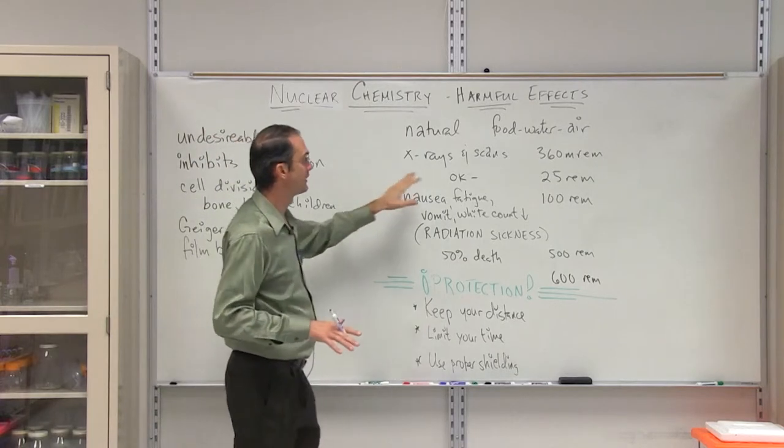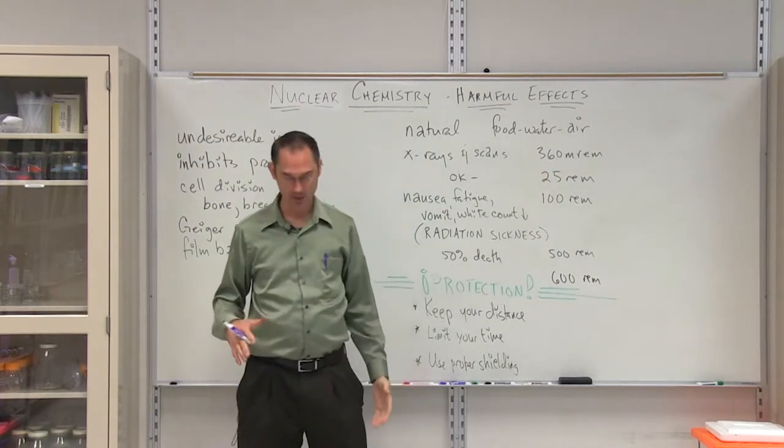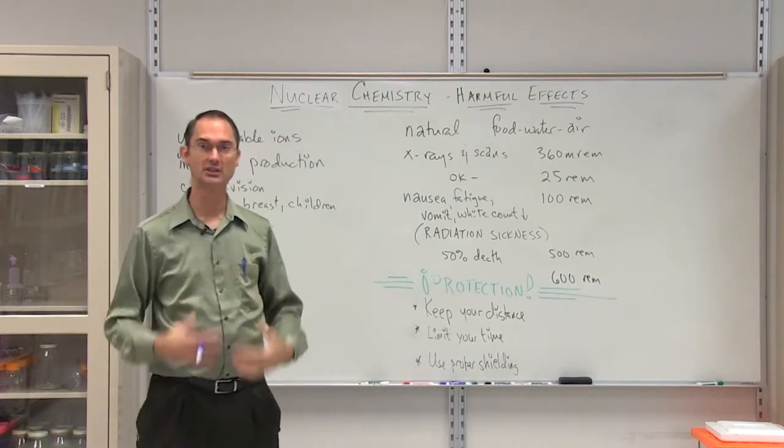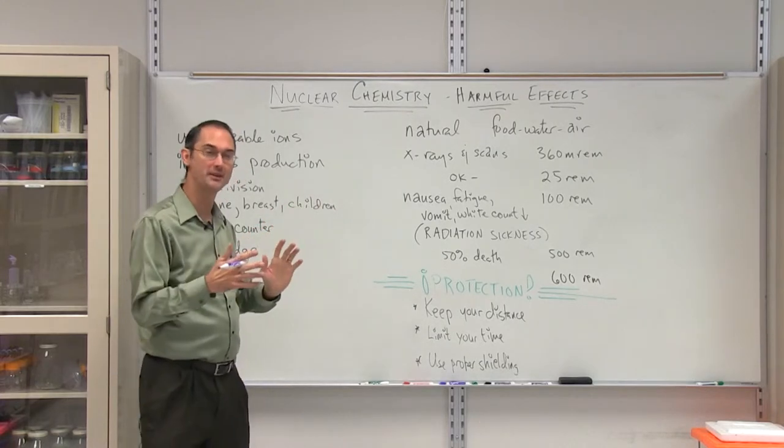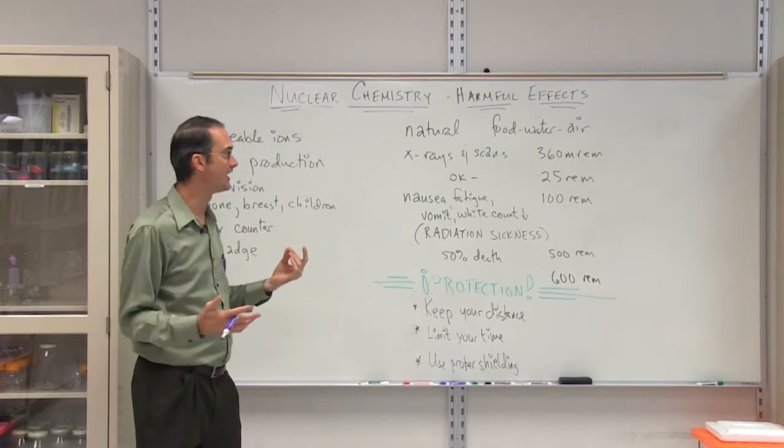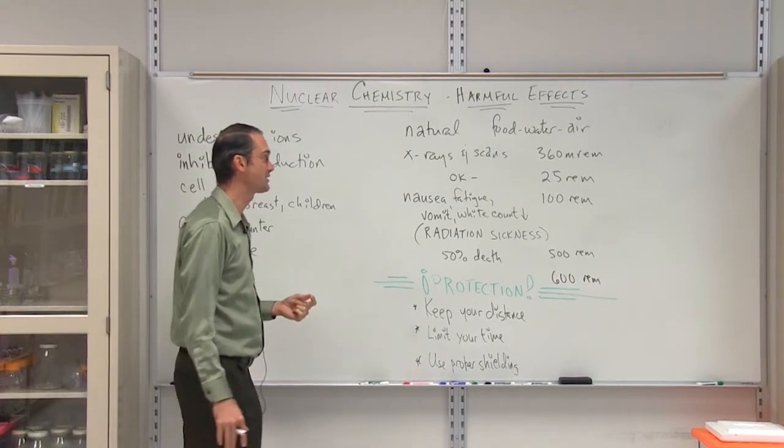When you do get an x-ray or a scan, you're exposed to about 360 mREMs, which is basically okay. They put the big lead on top of you so it does not go to any vital organs. And the other person will go behind the wall because the person who takes all of these x-rays, they're going to be giving out many of these and they need that additional protection.